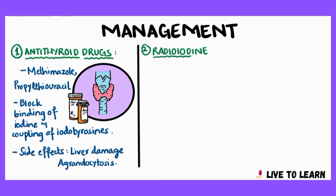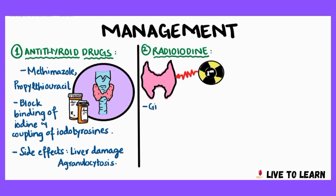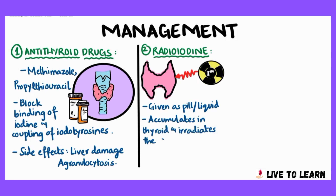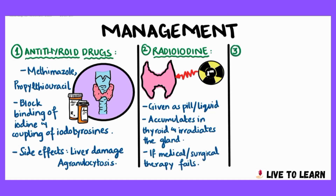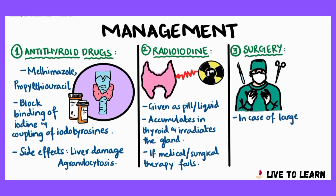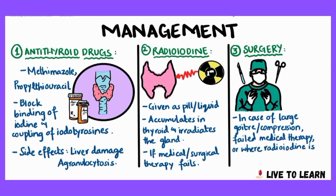Radioactive iodine is usually given in the form of pills, capsules, or a liquid. It accumulates in the thyroid and irradiates the gland with its beta and gamma radiations. Indications for radioiodine include failed medical or surgical therapy. Surgery is indicated in cases of large goiter compressing the trachea, cancer suspicion, failed medical therapy, or where radioiodine therapy is inadvisable.